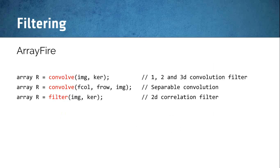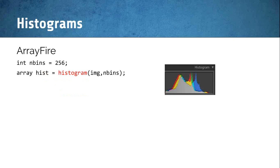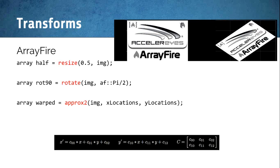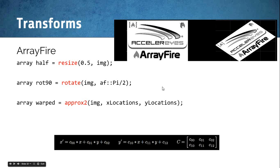If you want to use filters, you can do a 1D, 2D, or 3D convolution filter. You can use a separable convolution filter with a column filter followed by a row filter on a given image, or a 2D correlation filter. There's a lot of different things you can do, and the functionality is already there. You can just as easily get a histogram. In this example, I've loaded an image, resized it by a factor of half, rotated it, applied an additional transformation, and put the result on the right — all simple and highly optimized transformations.